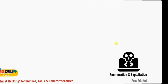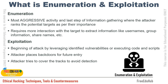Enumeration is the most aggressive activity and the last step of information gathering, where the attacker ranks potential targets by their importance. Once information is collected, targets are categorized according to what the attacker is trying to achieve. For example, if a hacking group is looking for Active Directory or databases, those will be their prime targets, and they'll prioritize preparing payloads and toolkits accordingly.